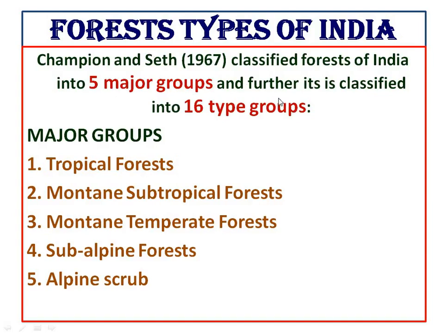This question has appeared and is repeated in exams. Note down: there are five major groups and sixteen types. The five major groups are: tropical forest, mountain subtropical forest, mountain temperate forest, sub-alpine forest, and alpine scrub forest.